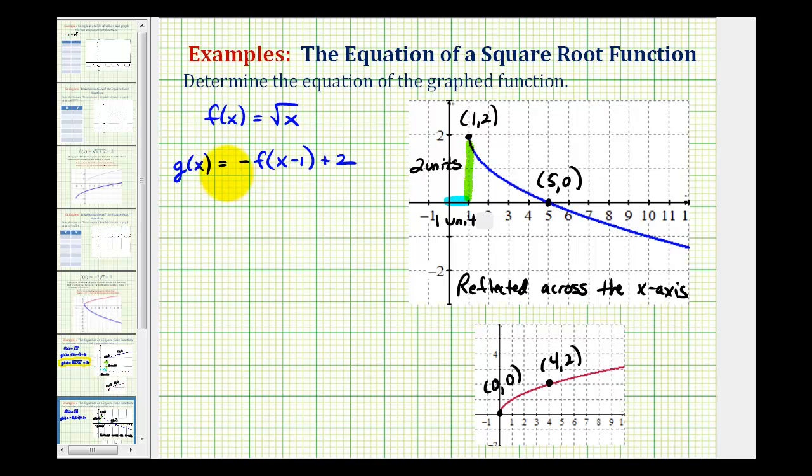the negative represents the reflection across the x-axis. The quantity x minus one represents the shift right one unit, and the plus two here represents a shift up two units, which means g of x would be equal to negative square root of the quantity x minus one plus two.